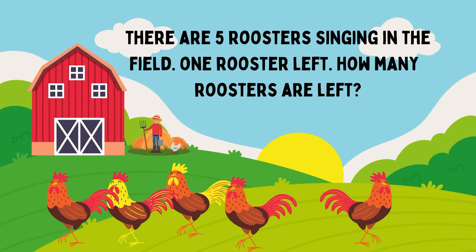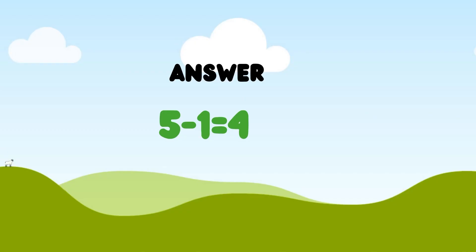Number 1. There are 5 roosters singing in the field. 1 rooster left. How many roosters are left now? So, 5 roosters minus 1 rooster is equal to 4. So, 4 roosters are left.